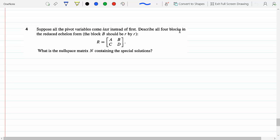Describe all four blocks in their reduced row echelon form, and they tell us that the block B should be an R by R. So if the pivot variables come last, then you understand what that means. They don't necessarily appear on the first column, they appear later.